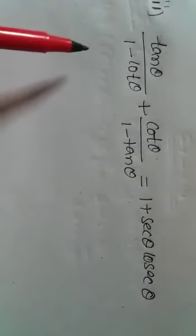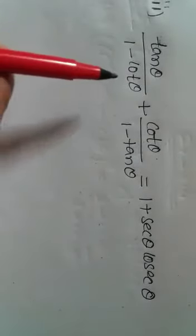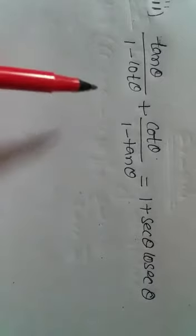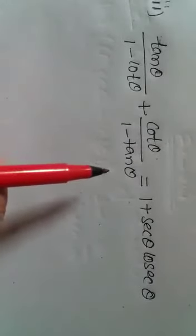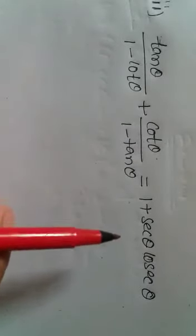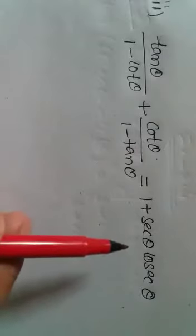Our question is: tan θ divided by (1 minus cot θ) plus cot θ divided by (1 minus tan θ) is equal to 1 plus sec θ·cos θ.